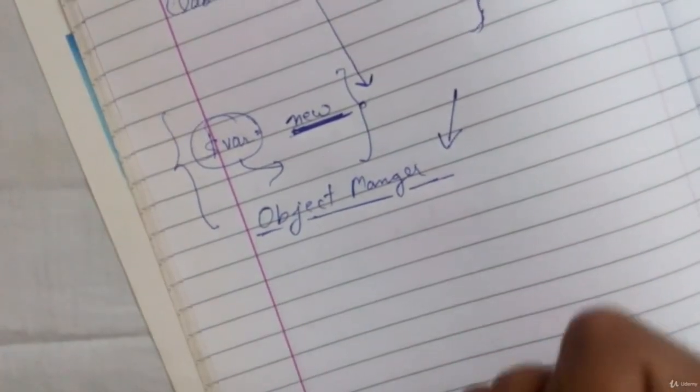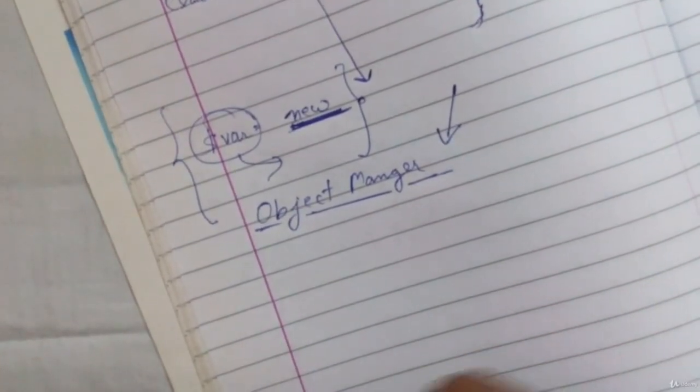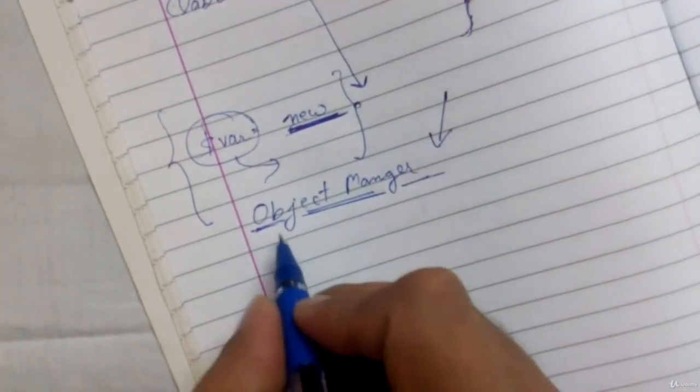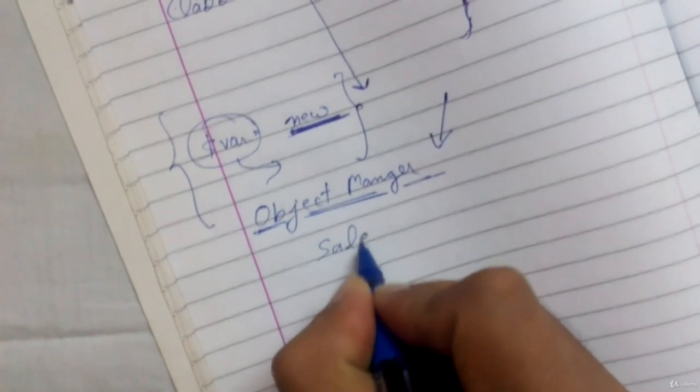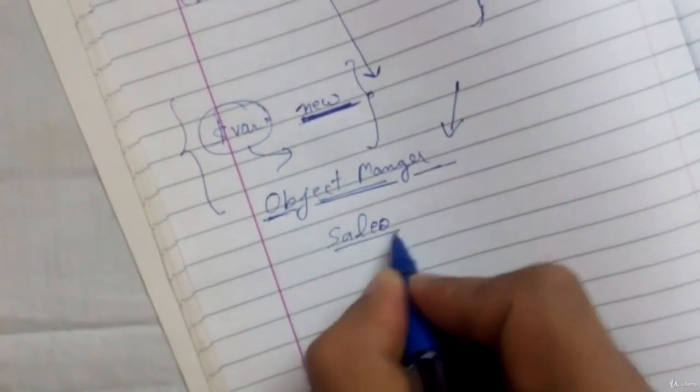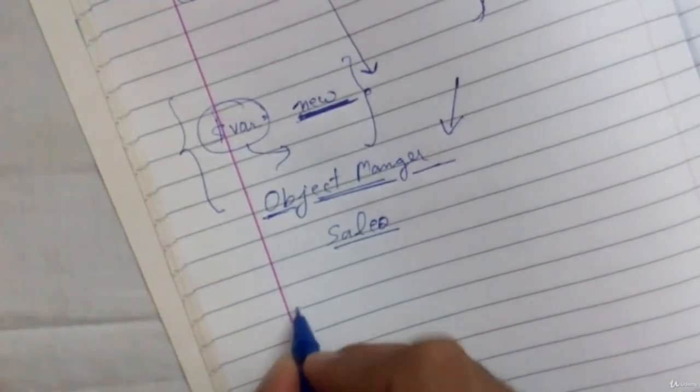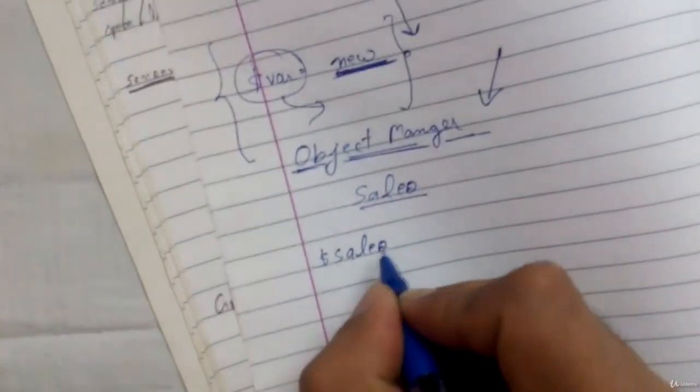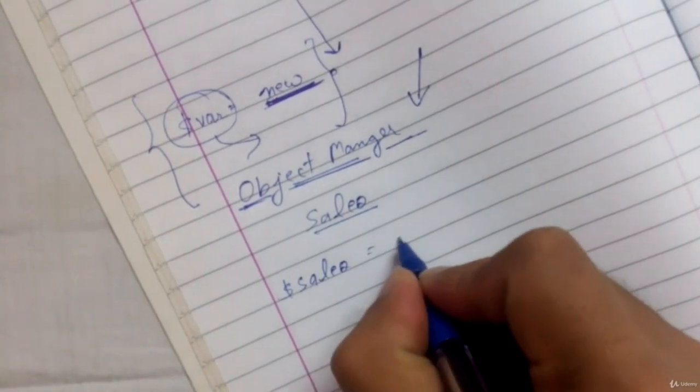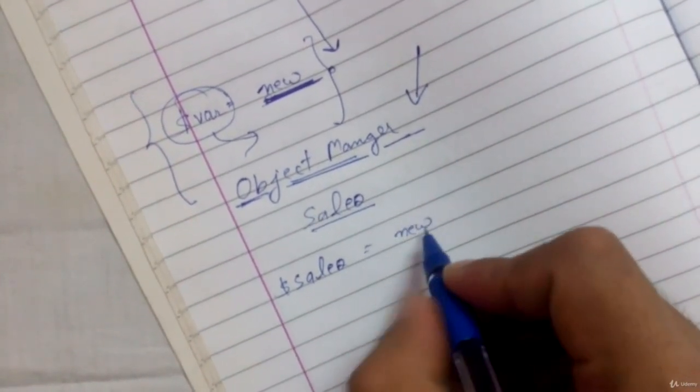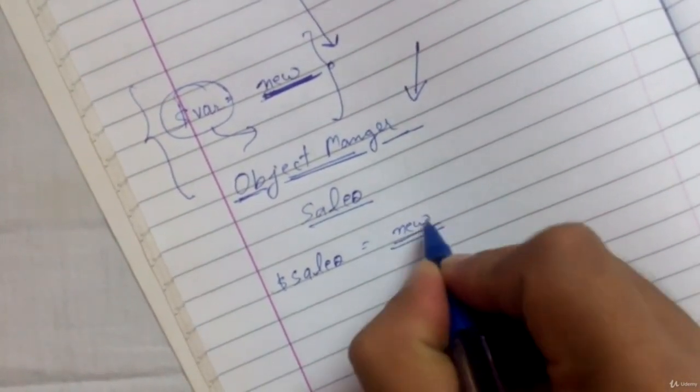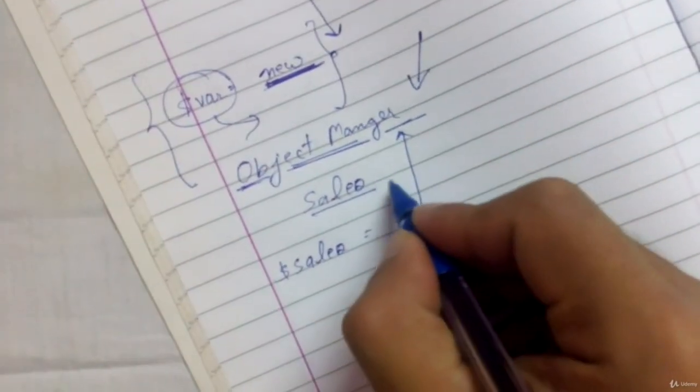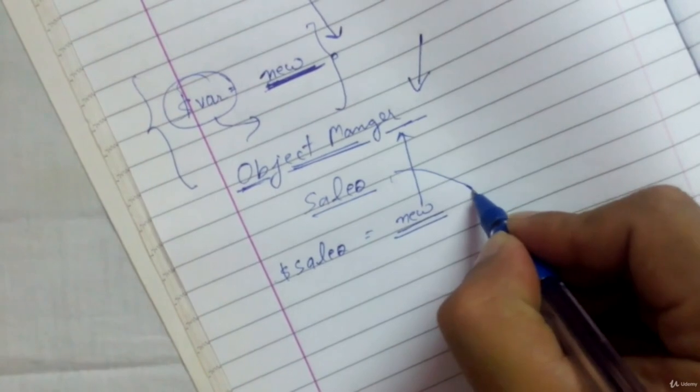Now whenever Magento is going to create any new object, it will be using this Object Manager class which will be simply defined in Magento's framework. Now if you go further and we see that, let's say I have a class named sales, and whenever I'm going to create the instance of this class, let's say I have dollar sales as my variable and I try to create the instance of this class.